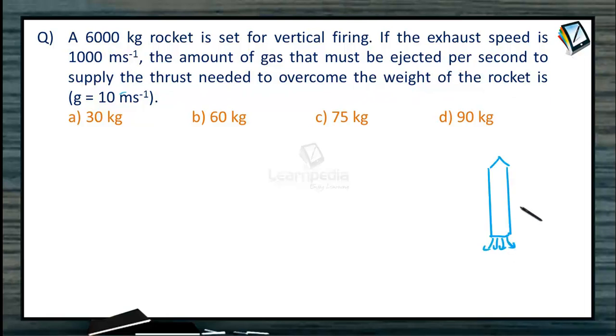M₀ is the mass of the rocket. The thrust force against the weight M₀g is equal to V times dM/dt. The rate of change of mass dM/dt will be equal to M₀g divided by V.